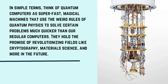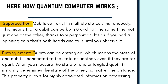Now let's understand how quantum computers work. First: superposition. Qubits can exist in multiple states simultaneously, meaning a qubit can be both zero and one at the same time — not just one or the other — thanks to superposition. It's as if you had a spinning coin that is both heads and tails until you observe it.